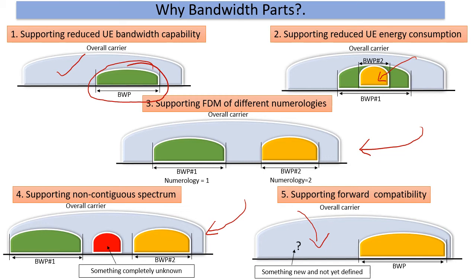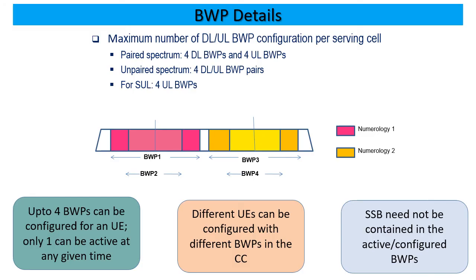Let us see a few details of bandwidth parts in 5G NR. As of today in Release 15, 5G NR allows us to configure four downlink and four uplink bandwidth parts for a UE. They can be of different sizes and they can be overlapping. Depending on TDD and FDD, there are links between downlink and uplink. So there is a lot of flexibility and a lot of configuration potential for managing a variety of advantages that we talked about.